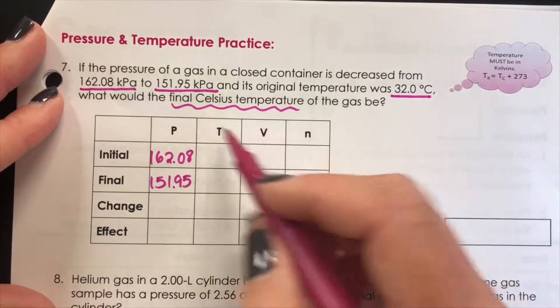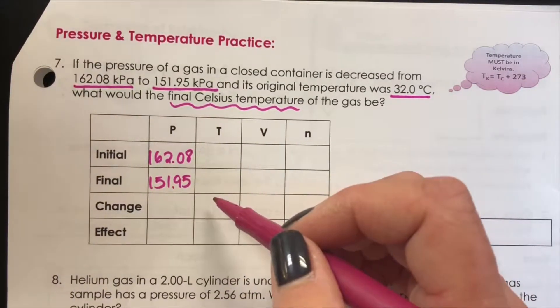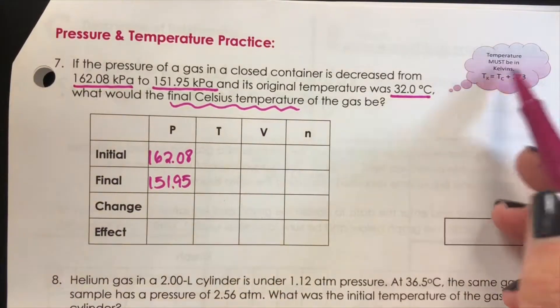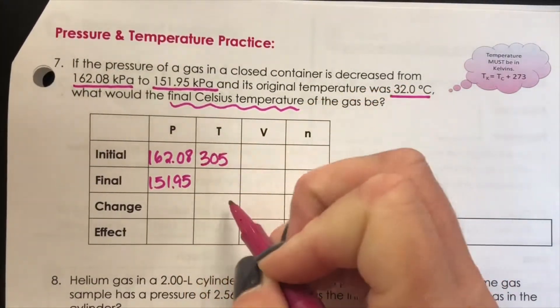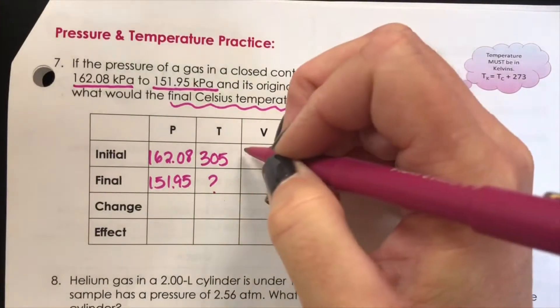Temperature, even though our final temperature needs to be in Celsius, in order to use the gas law we must convert this to Kelvin by adding 273. So our initial temperature is 305 and we're looking for the final temperature.